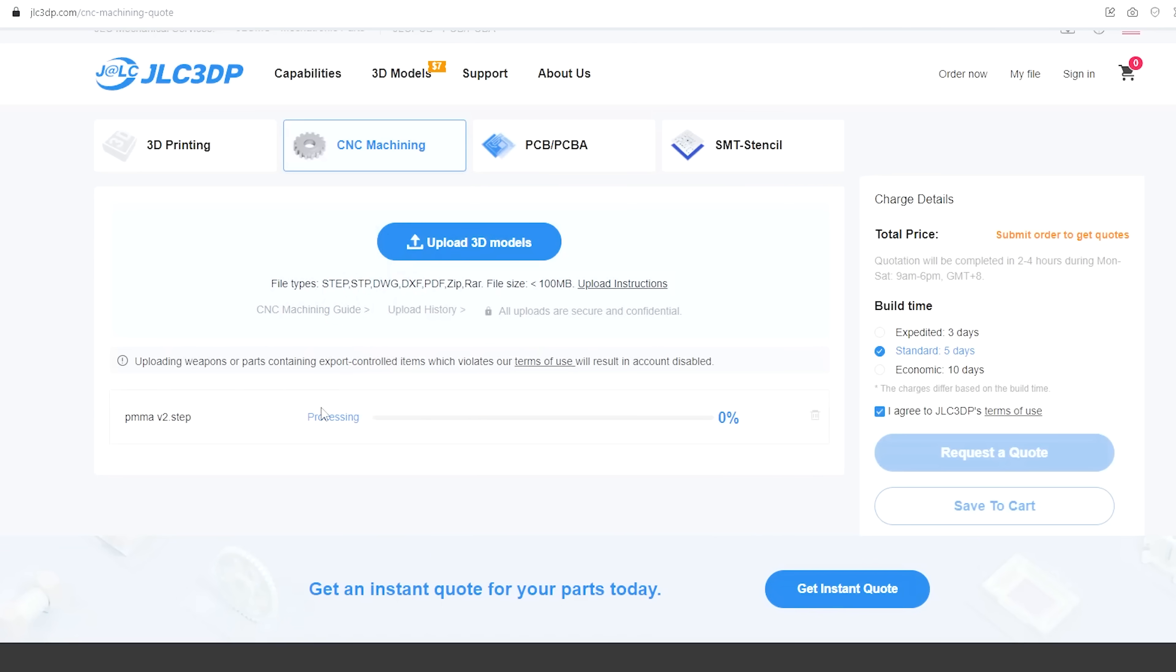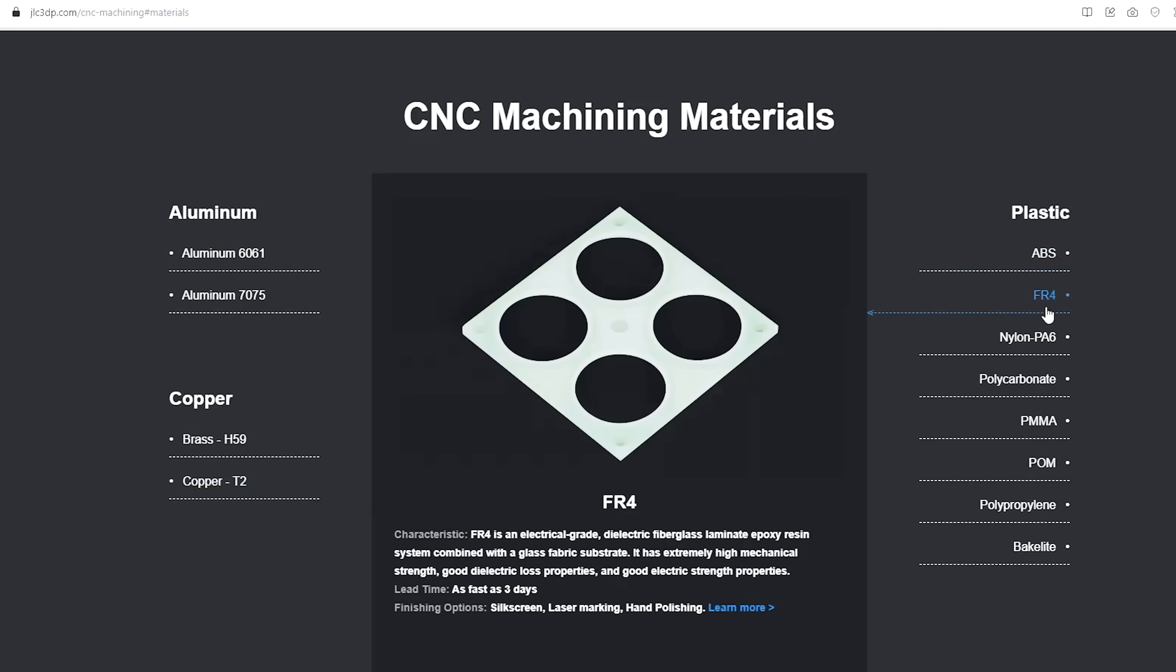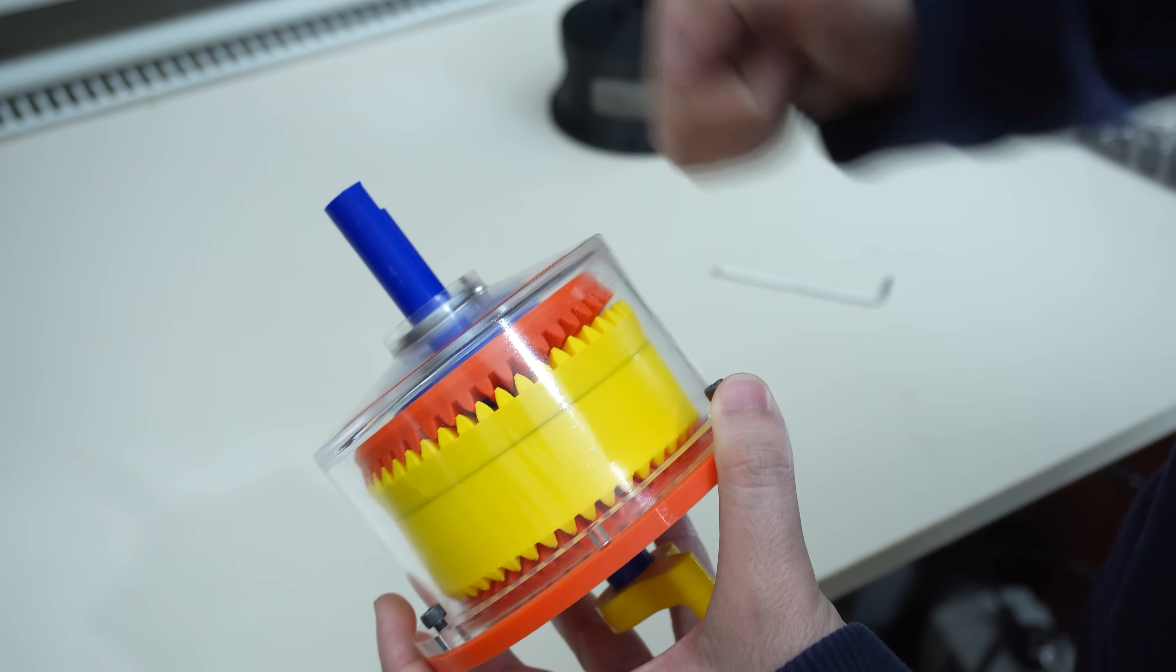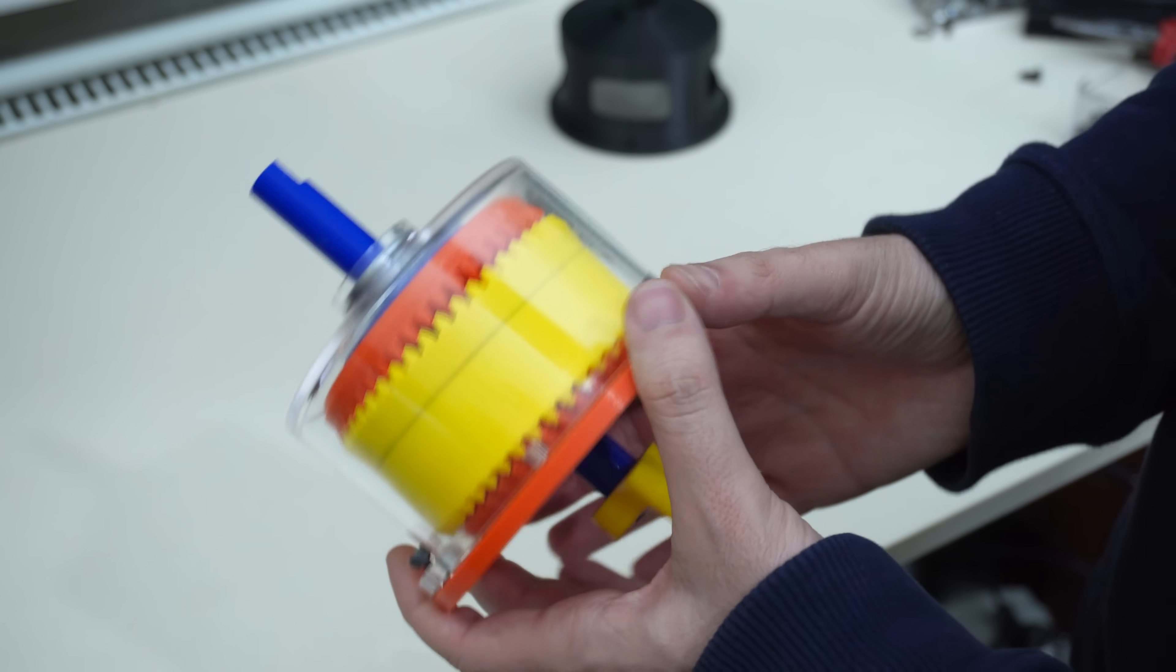The process is very simple. Upload your design, choose the material. Options include aluminum, copper or plastic. And within a few hours, you get a quote. They made and shipped the cover in just three days, which was quite fast and smooth. JLCPCB has mid-year sales going on right now, so if you need PCBs, 3D printing or CNC services, it's a great time.